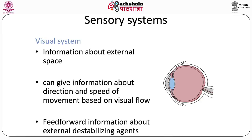The visual system provides information about the external world. When walking on rough terrain, the visual system encodes the external space around us, gives prior warning about potential obstacles, and anticipates potential destabilizing influences — allowing appropriate corrective responses.